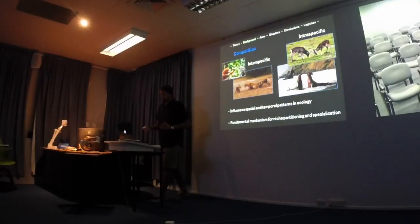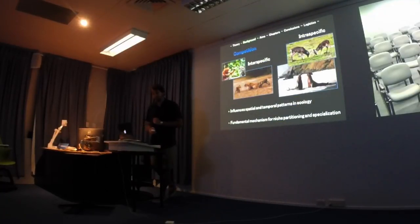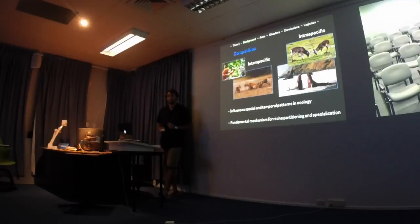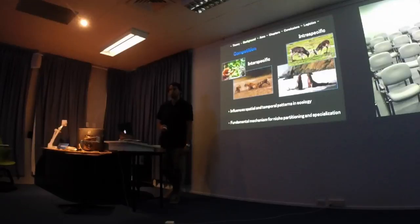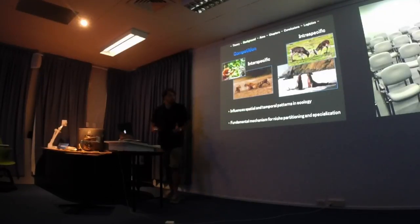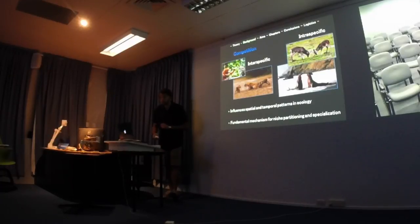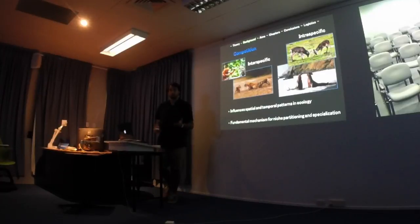There are two main forms of competition: inter-specific, which is between different species, and intra-specific, which is between the same species. Both influence spatial and temporal patterns in natural communities and are fundamental mechanisms behind niche partitioning and ecological specialization, making them central to this thesis.